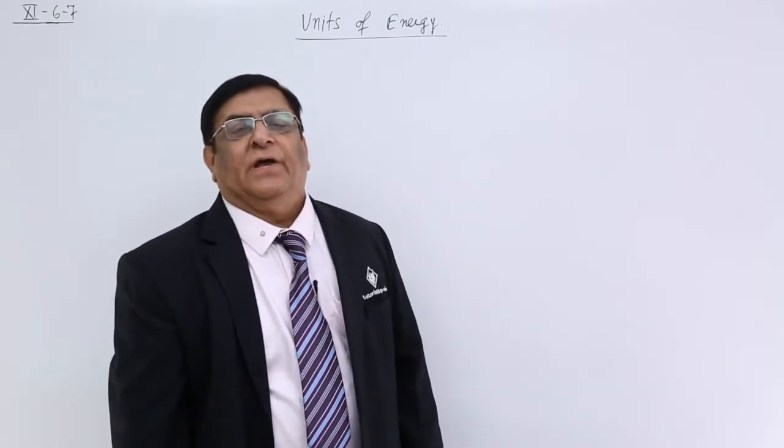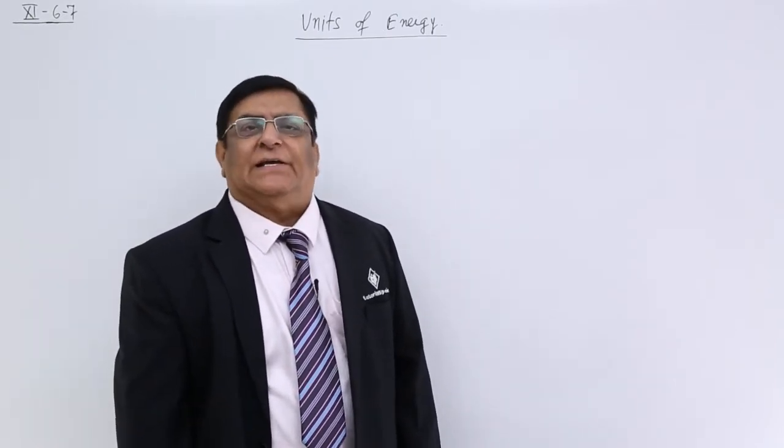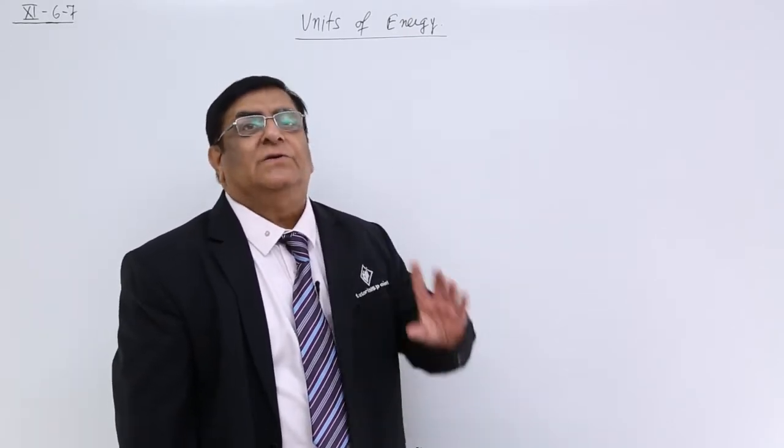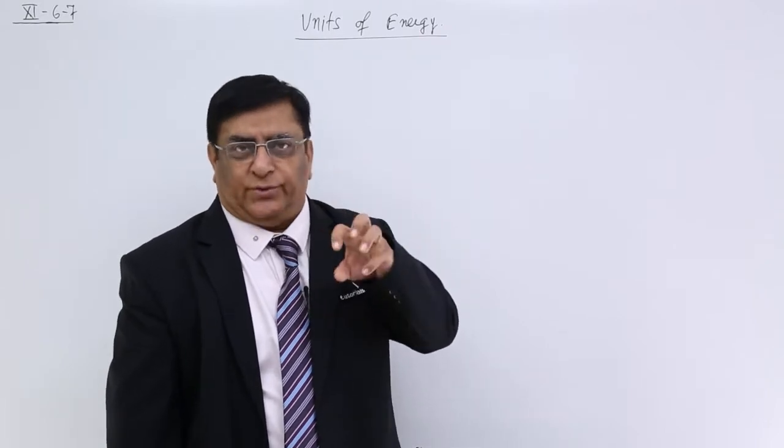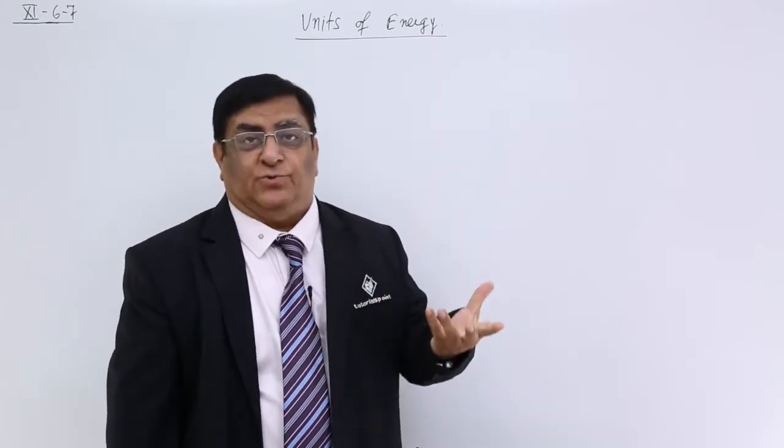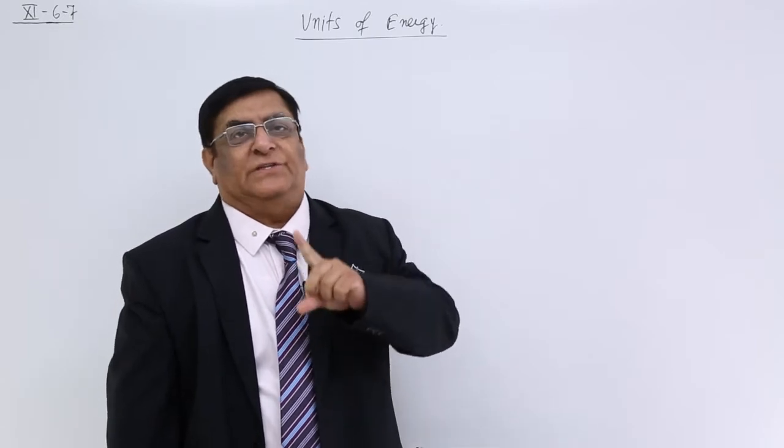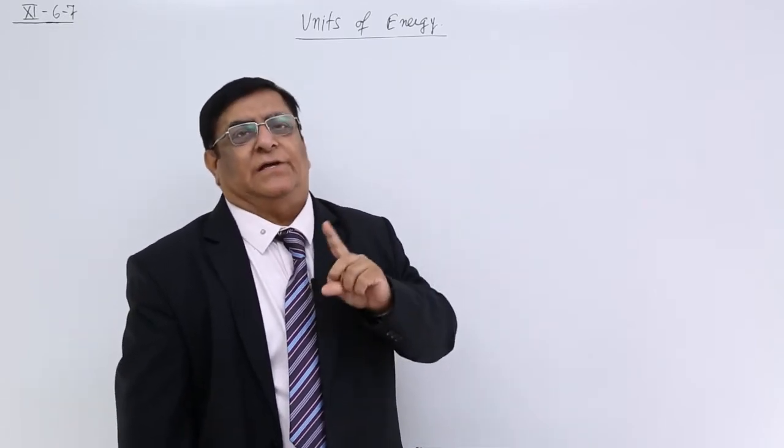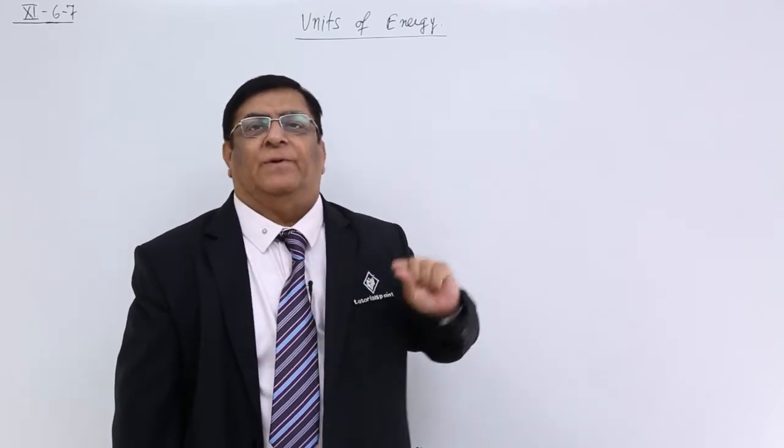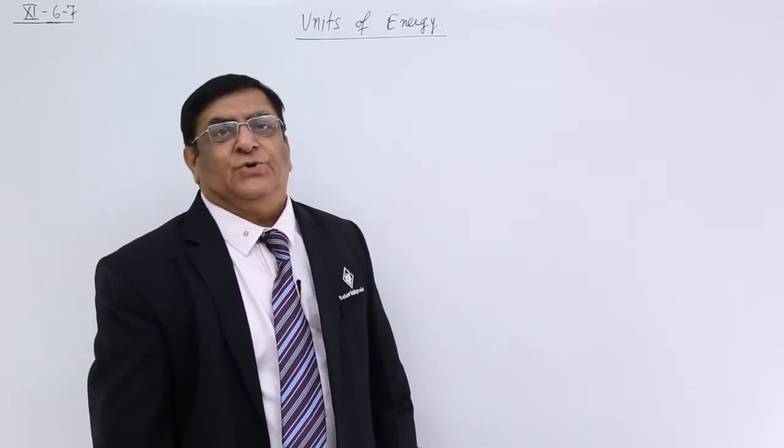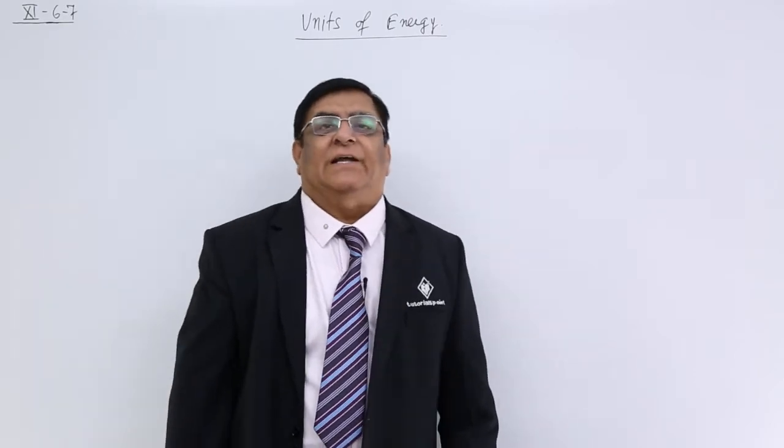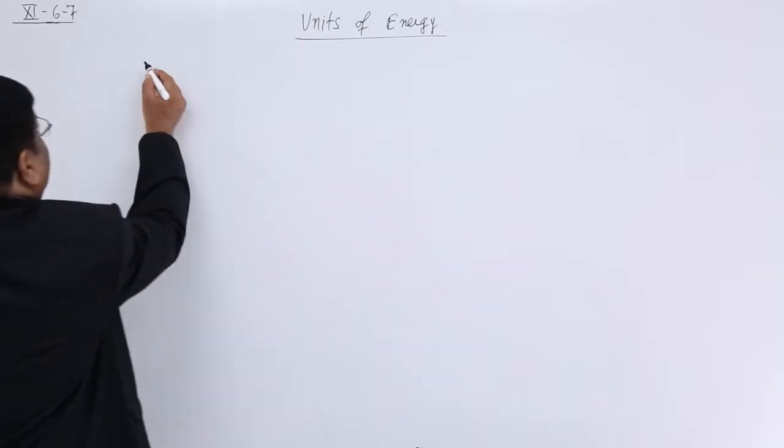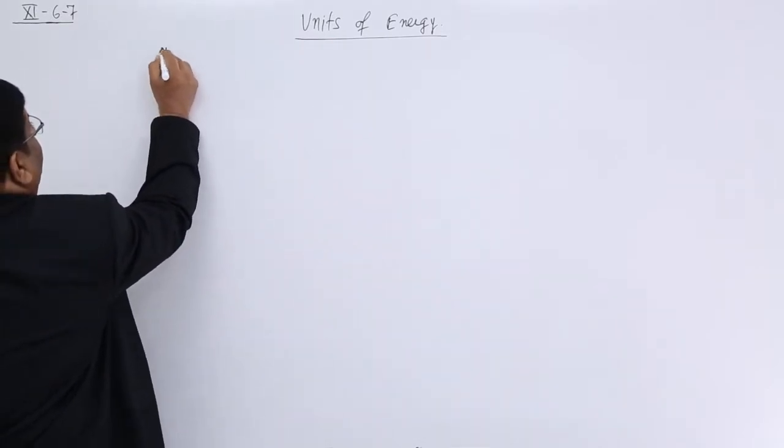Units of energy. Every physical quantity has a unit. We know that energy means work done, work stored, capacity to do the work. This is a derived quantity because it is derived by a relation force multiplied by displacement. So it must have a derived unit also. What is that unit? The unit of energy is Joule.